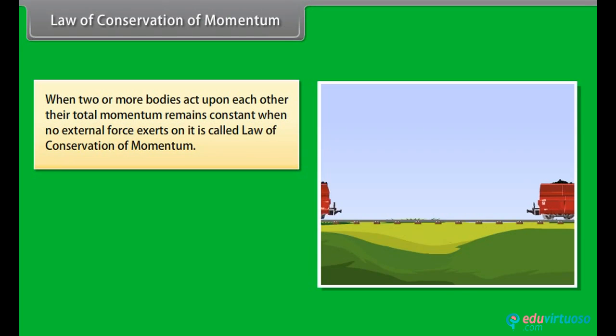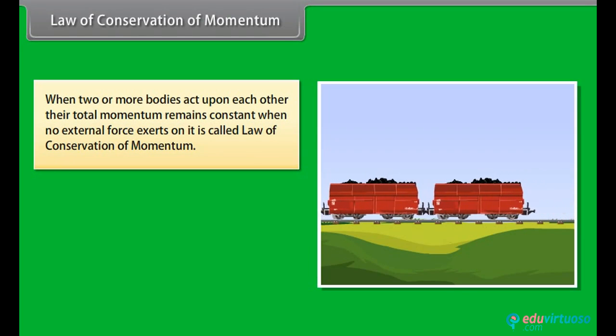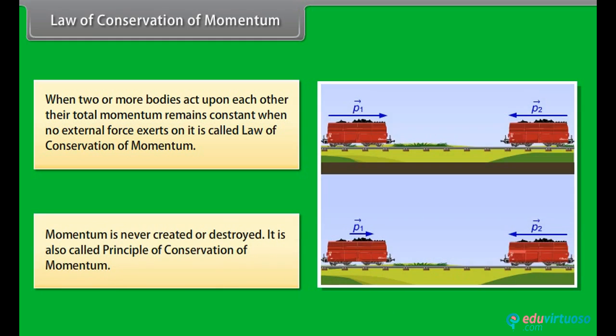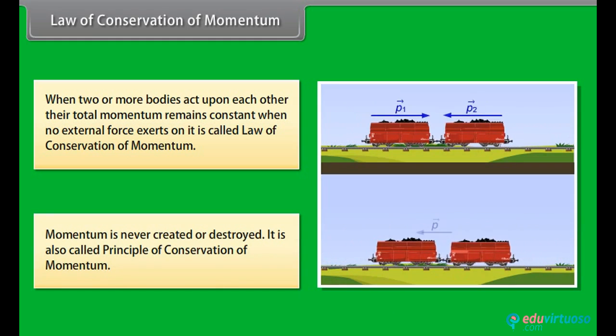Law of conservation of momentum. When two or more bodies act upon each other, their total momentum remains constant when no external force exerts on it. This is called law of conservation of momentum. Momentum is never created or destroyed. It is also called principle of conservation of momentum.